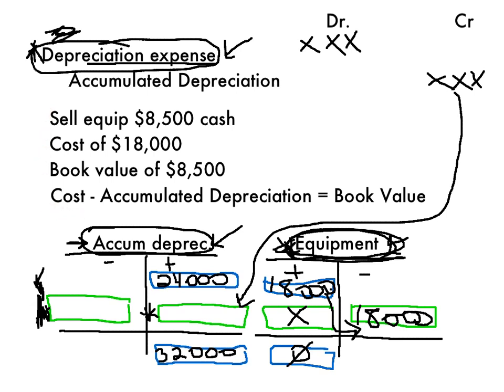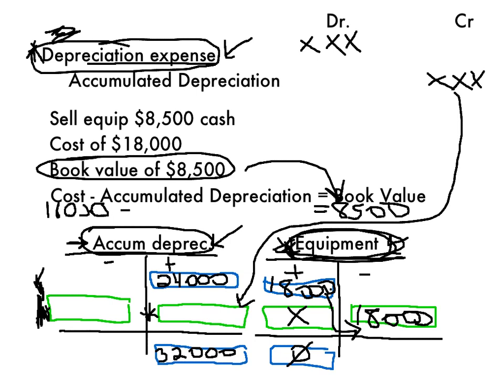And so the formula we need to understand is that I take my cost, $18,000. I subtract any accumulated depreciation along with that equipment that I just sold. And that gives me this thing called book value. The cost of the equipment was $18,000. I don't know how much accumulated depreciation there was. But they do give me the book value. So this is the missing link right here. It's $8,500. So what this tells me is $18,000 minus X equals $8,500.